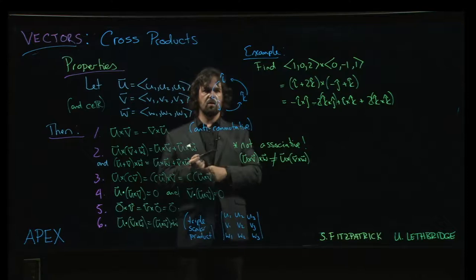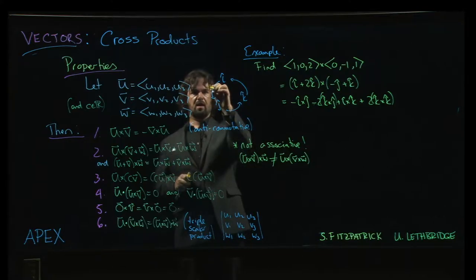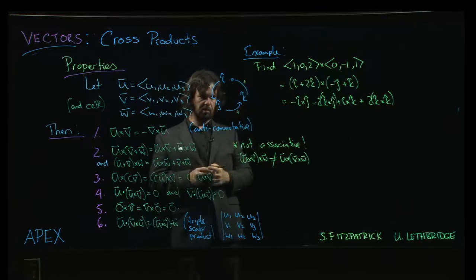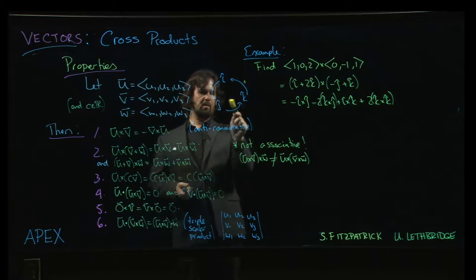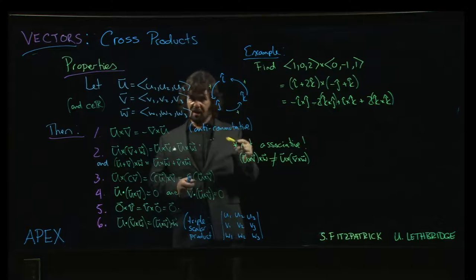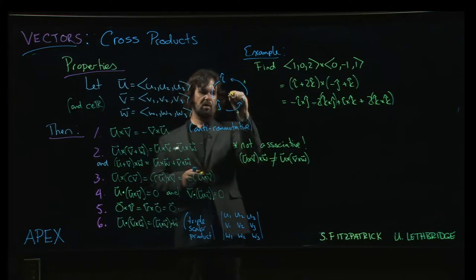That if you do i cross with j, you'll get k. And the arrows here are going in the direction of positive cross products. So i cross j would give me k. j cross with k gives me i. k cross with i gives me j. So you can remember them in this sort of circle here of cross products. I find it useful.